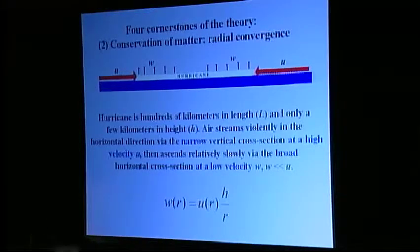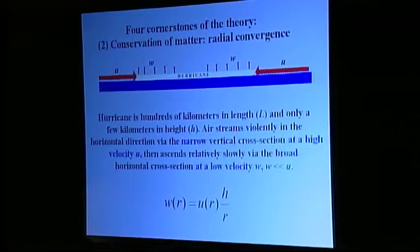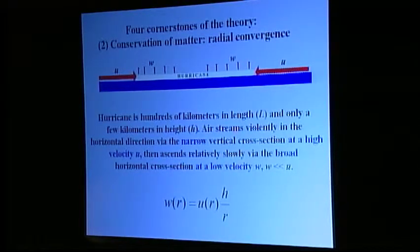The second law that must be respected is the law of matter conservation. It consists in the simple fact that as much air enters the circulation event in the horizontal direction, exactly the same amount should be leaving it in the vertical direction. This condition relates the vertical and radial velocities as the equation at the bottom of this page prescribes. For example, as far as the hurricane is much broader than high, air streams inside very rapidly in the horizontal direction through the narrow vertical cross-section of the hurricane, and then rises much more slowly via the broad horizontal area.